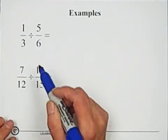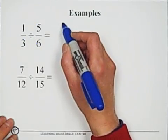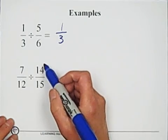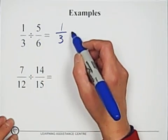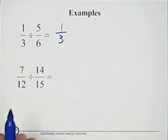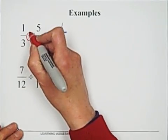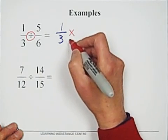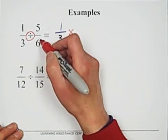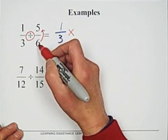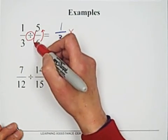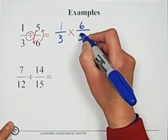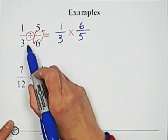Follow the rule: we need to convert the division process to a multiplication process. Change the division sign to multiplication, and invert the second fraction — six goes to the top, five comes to the bottom, which gives us six over five.